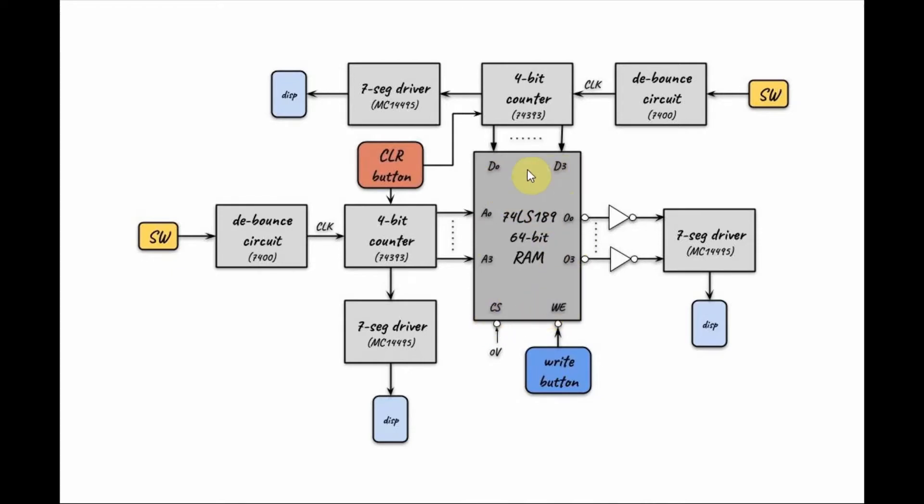To generate the 4-bit number to be copied into the memory, the user presses a switch which generates a clock signal that has been cleaned up by the debouncing circuit. This clock signal feeds into a 4-bit counter to generate a 4-bit number. The 4-bit number can also be displayed on the seven segment through the driver.